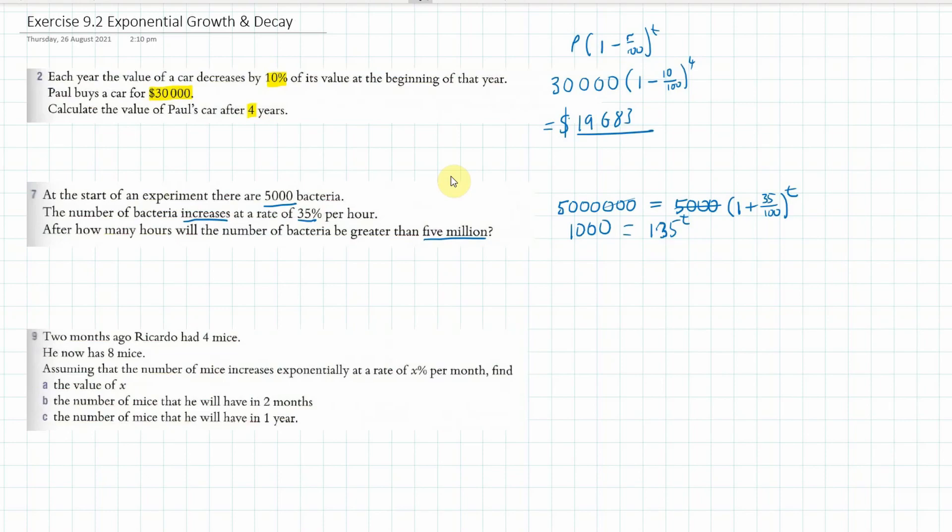Now if we're using trial and error we'd go alright, 1.35 and we try, let's try to the power of 10. 1.35 to the power of 10 and that is equal to 20, so that's no good. So we need to do, maybe we'll up it to 1.35 to the power of 30. Okay so we go back, change it to 30.